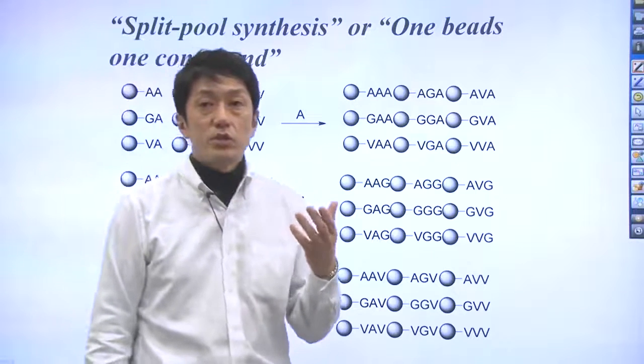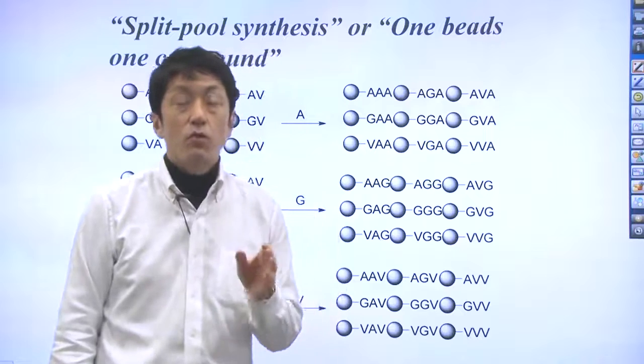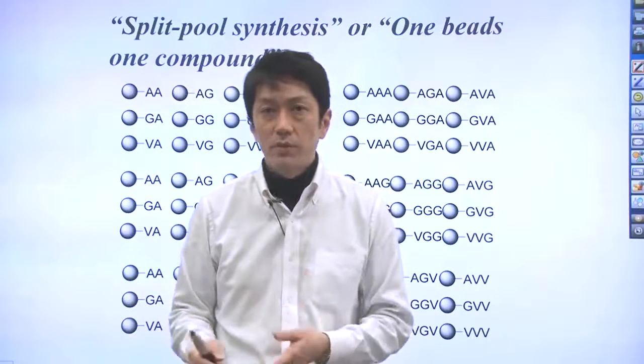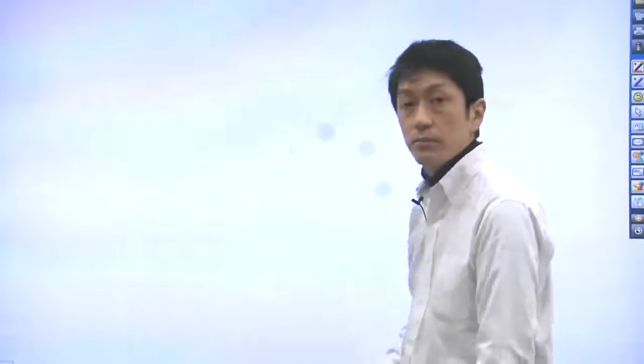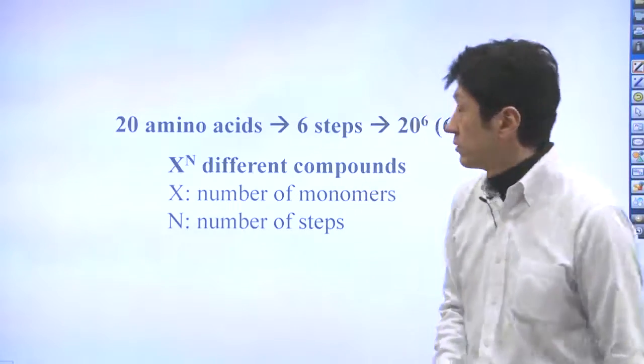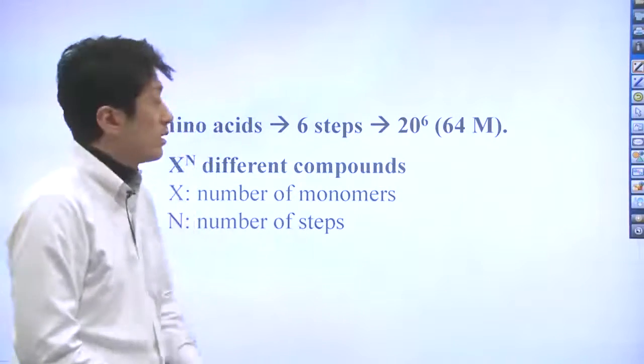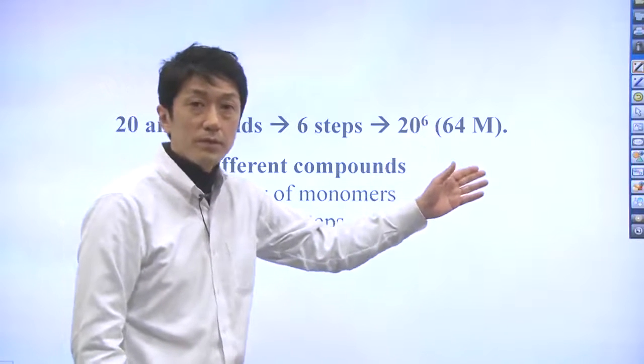When these procedures are carried out six times for 20 different amino acids, how many different peptides can be generated? That is 20 to the power of 6, 64 million different peptides.